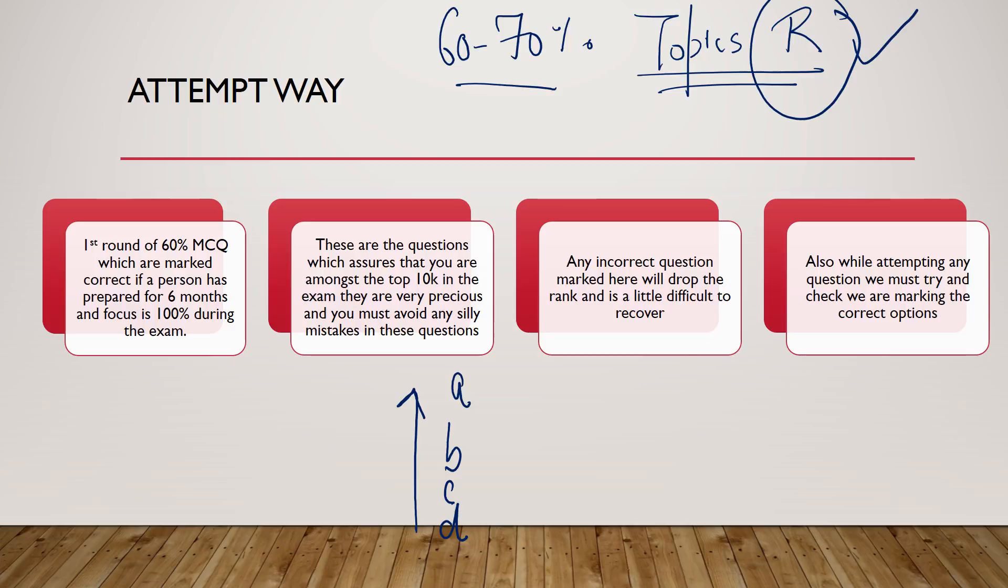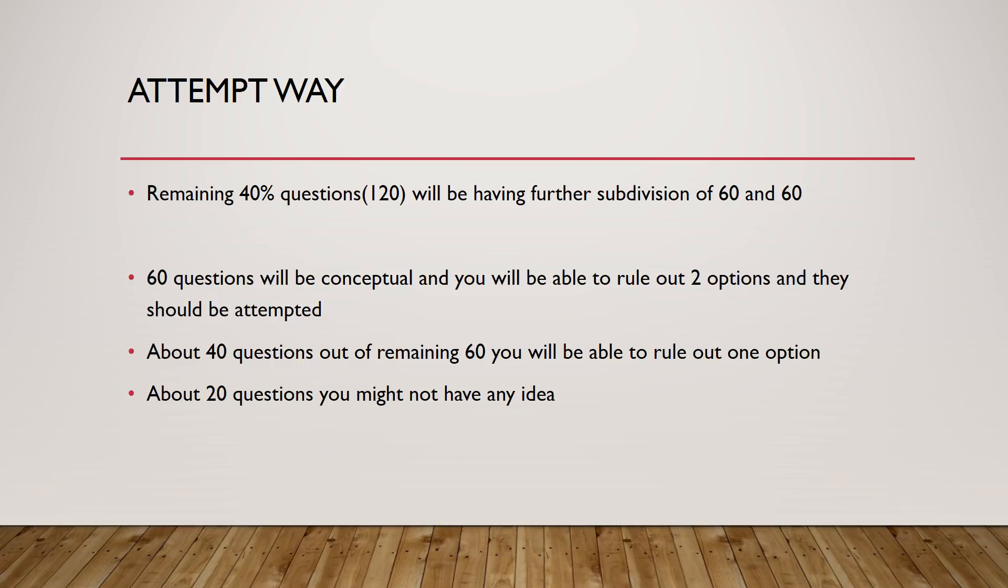Once you have got them correct, that's about 180 to 210 MCQs. That means you are in a top group. Now the rest of the MCQs, which will vary from 30 to 40% of questions depending on the paper, how it is set up, are the ones that you need to be careful. Let's take an example. That about remaining 40% questions, about 120 questions are remaining after the initial round. Now out of these 120, there will be another group of 60, 60 each.